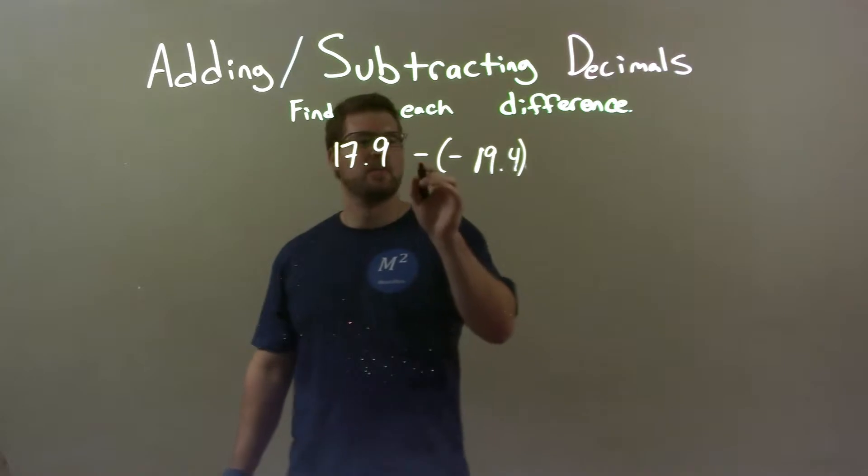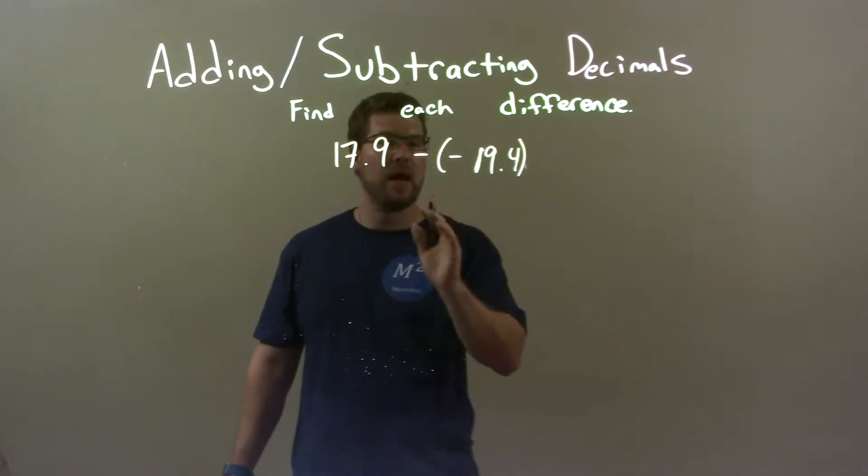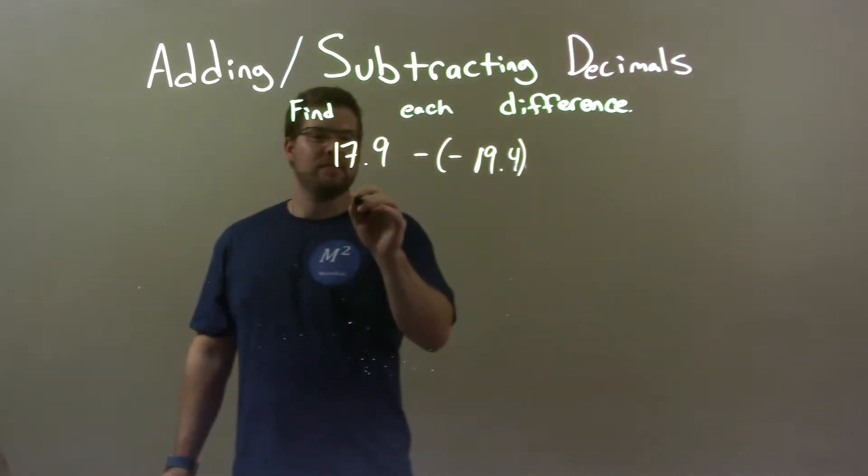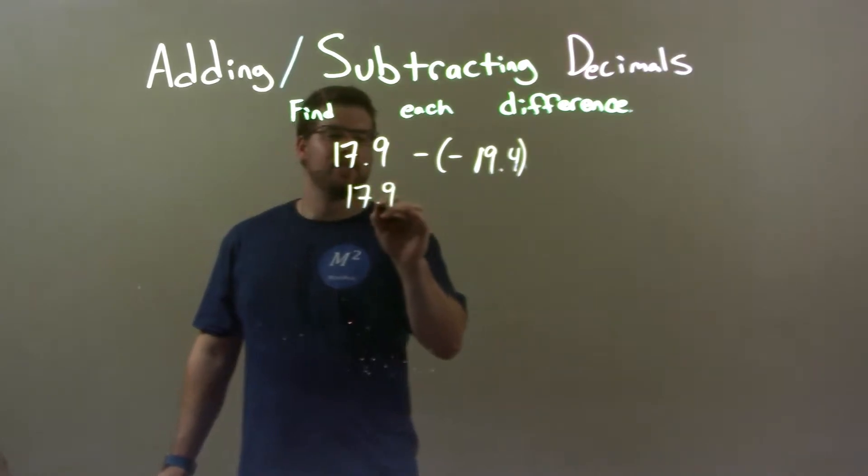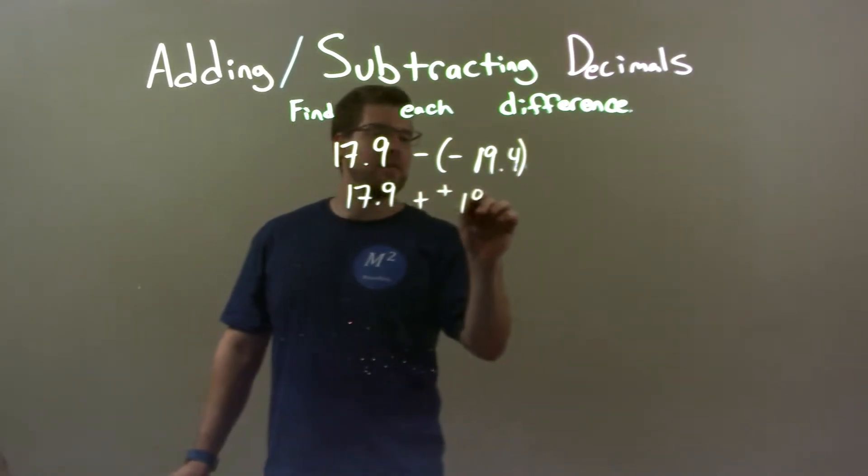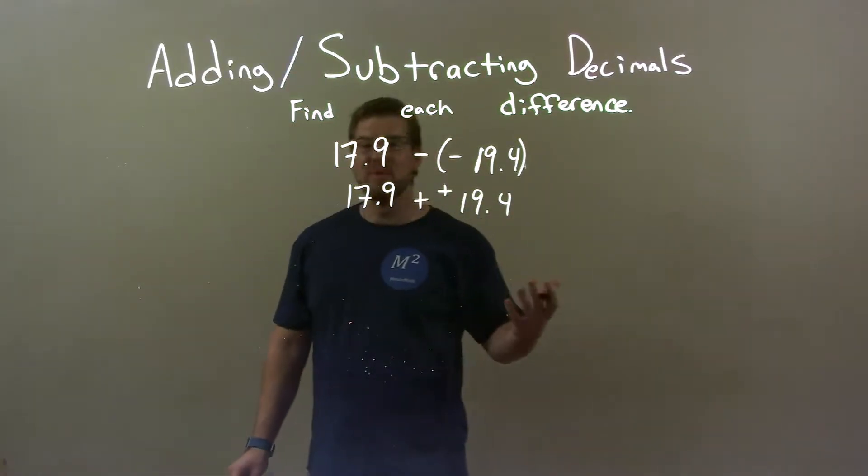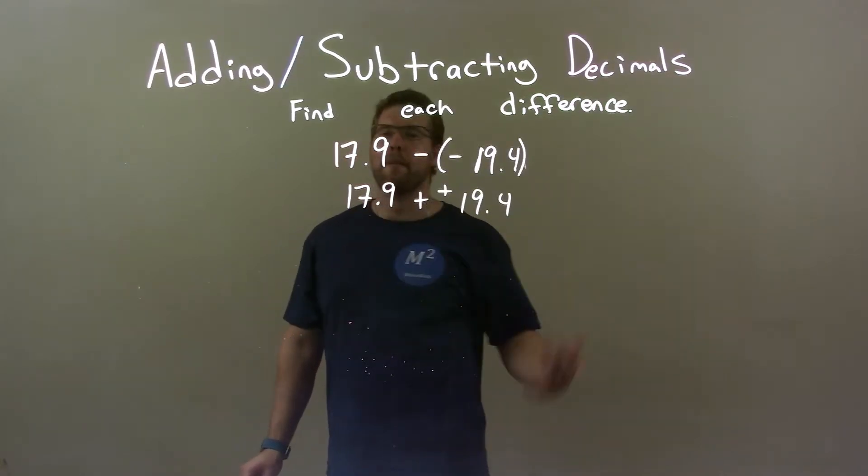Fun thing with this, subtracting a negative is the same thing as adding a positive. So, we have 17.9 plus a positive 19.4. Now, this becomes an easy problem. We're just adding two positive numbers.